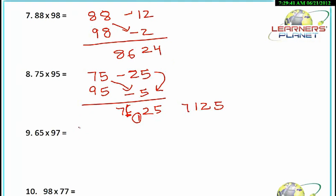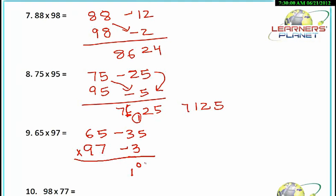Let's take 65 into 97. 65 is minus 35 from 100 and 97 is minus 3 from 100. 35 into 3 is 105 — we write 05 and carry 1. 65 minus 3 is 62, plus 1 gives 63. So 65 into 97 is 6305. Very quick, very interesting!